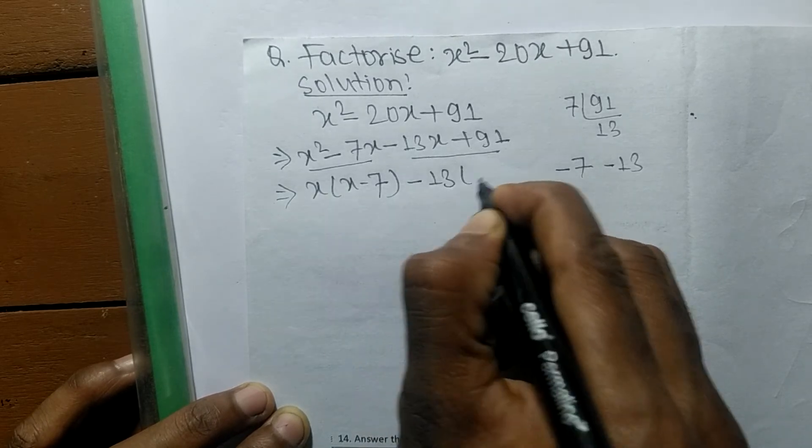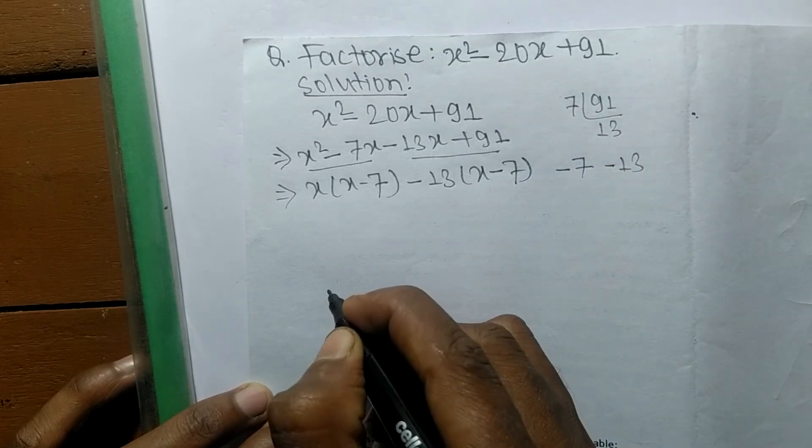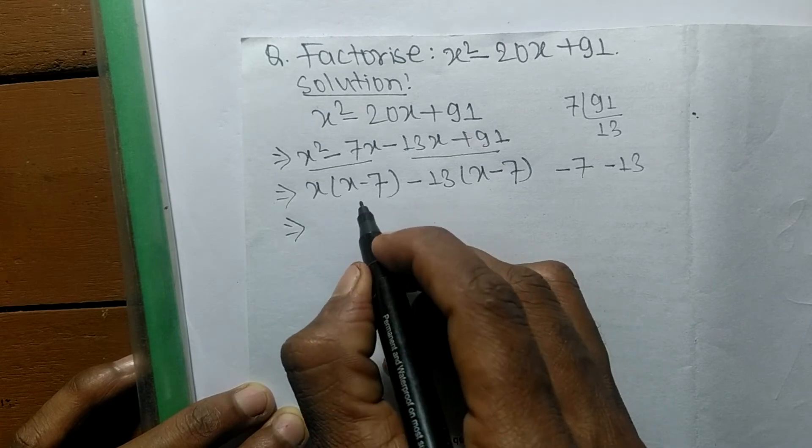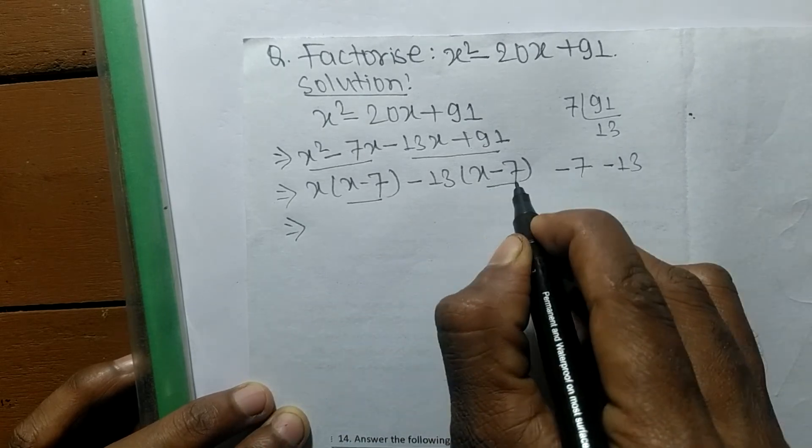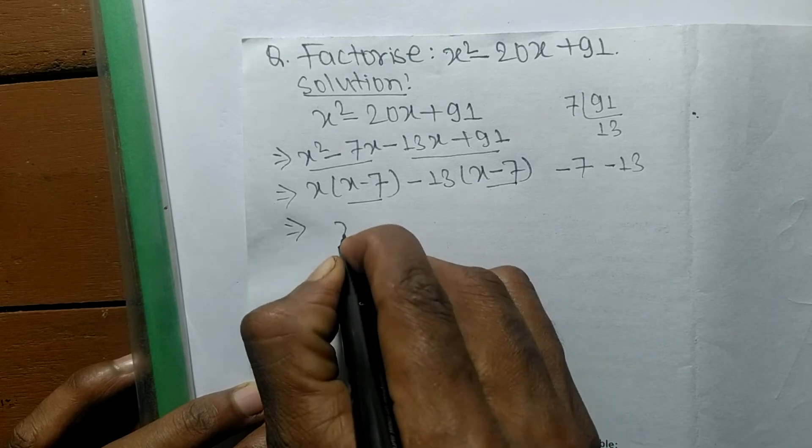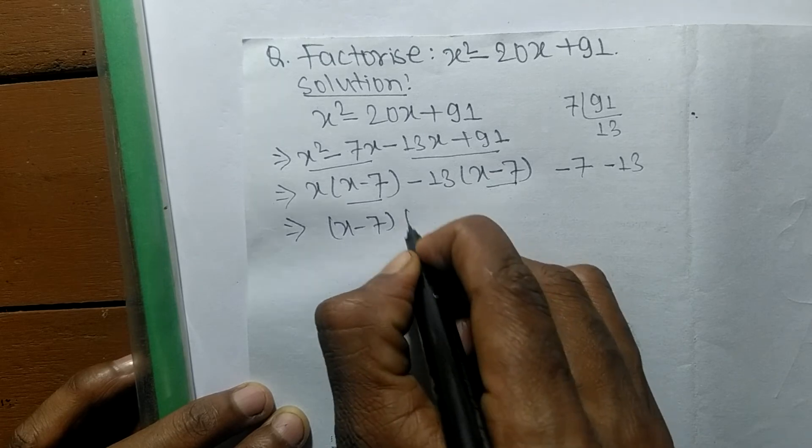the common here is -13, so the remaining is x - 7. As you look here, here is x - 7, and here is also x - 7. So x - 7 is common in both.